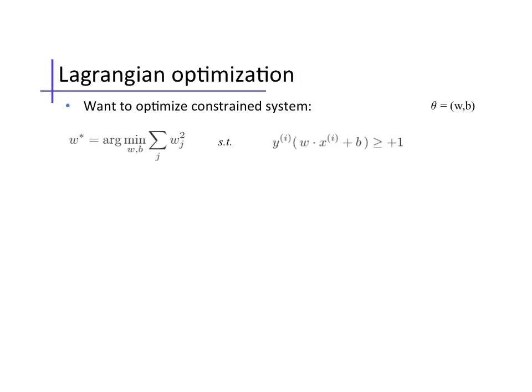First, recall our constrained optimization for the SVM, minimizing the weights subject to constraints that enforce a correctness margin on each data point. Let's think about how we would actually optimize this constrained system. Even finding a point that satisfies these constraints is not trivial. The constraints can only be satisfied if we find a perceptron with zero error. Even assuming that one exists, just finding one such example was the entire purpose of the perceptron algorithm.